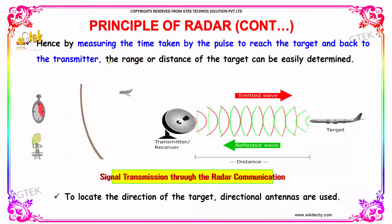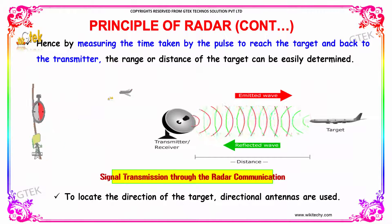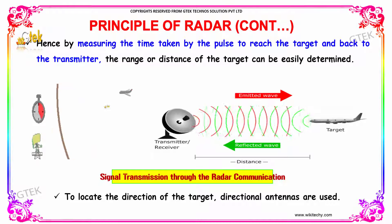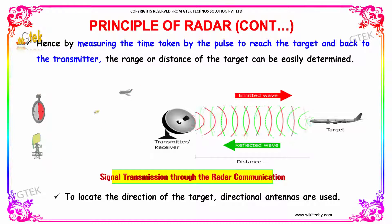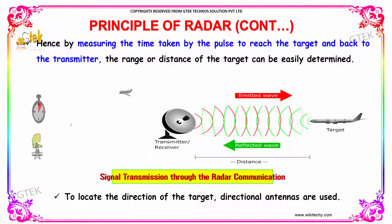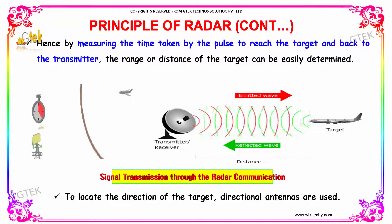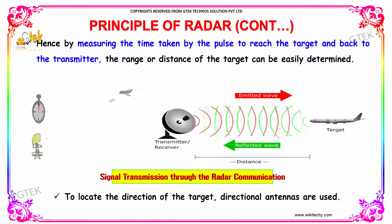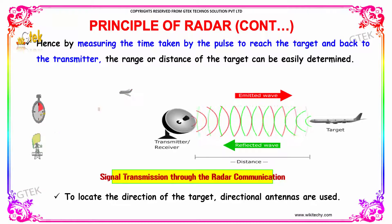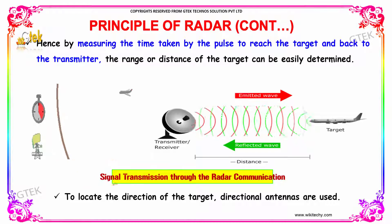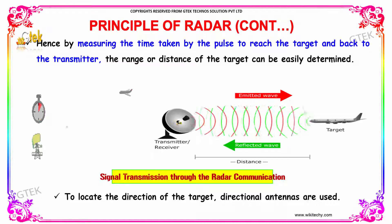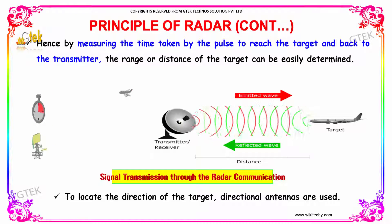Hence, by measuring the time taken by the pulse to reach the target and return back to the transmitter, the range or distance of the target can be easily determined. This is the clock. To locate the direction of the target, directional antennas are used.